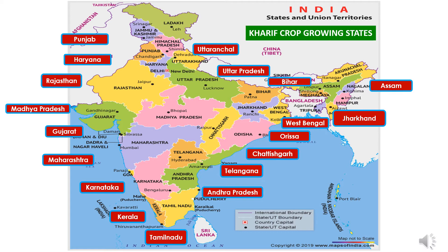Kharif season crops are majorly grown across our country compared to Rabi season crops, and these states play a major important role in the production of Kharif crops.